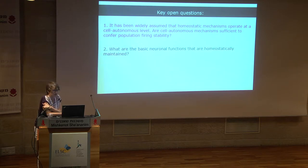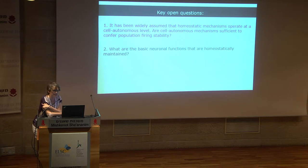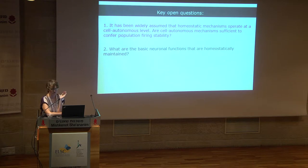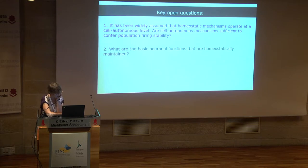The second question we ask: again, when you read a textbook or review, you find a sentence stating that the nervous system maintains basic neuronal function — but it is really unclear what these basic neuronal functions are that the system maintains, and we were curious to address it.